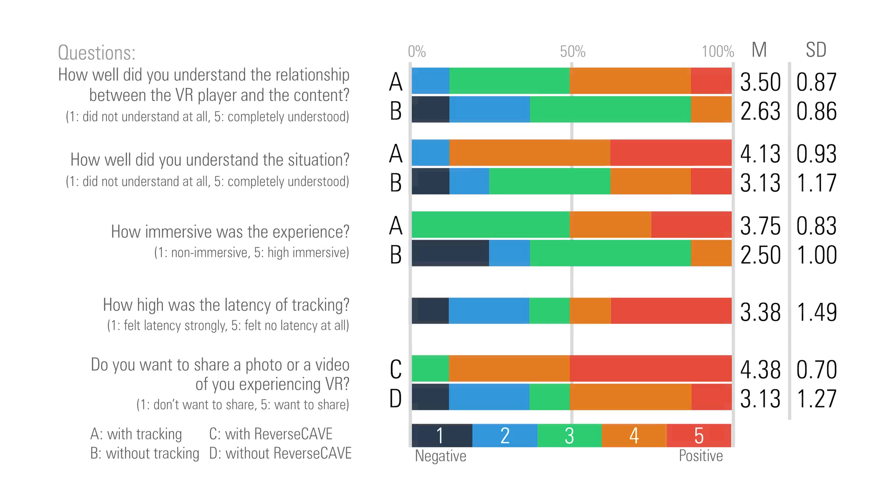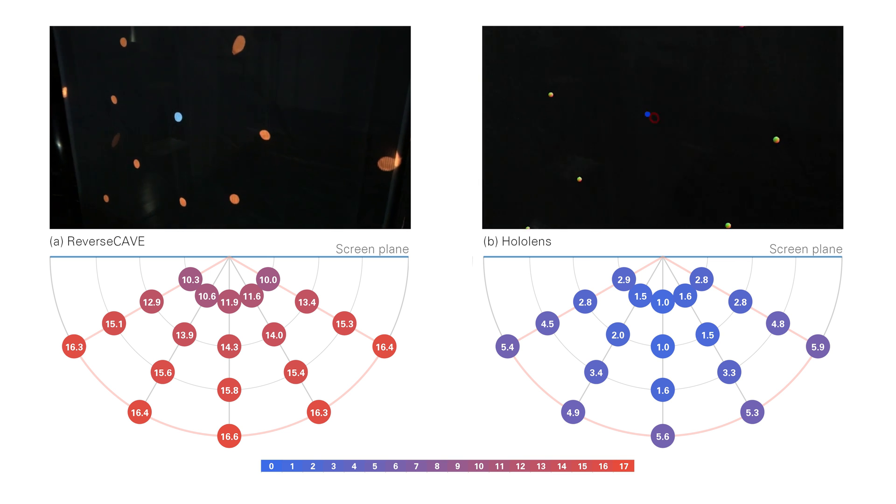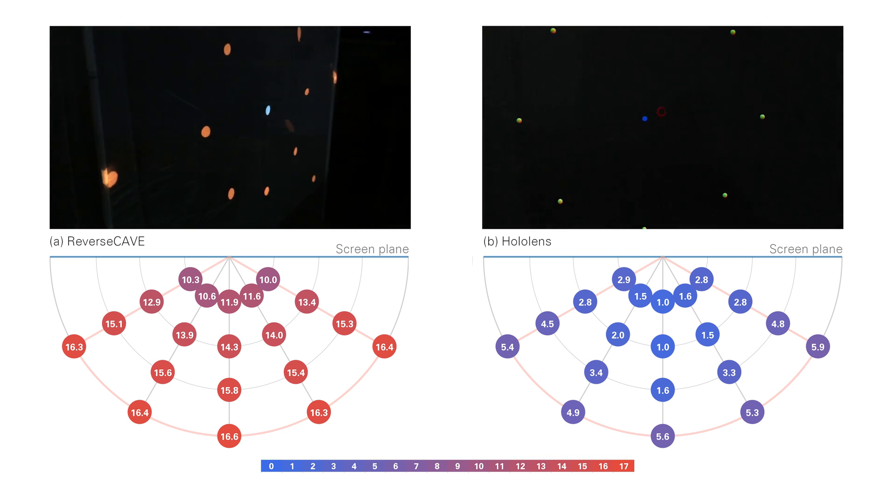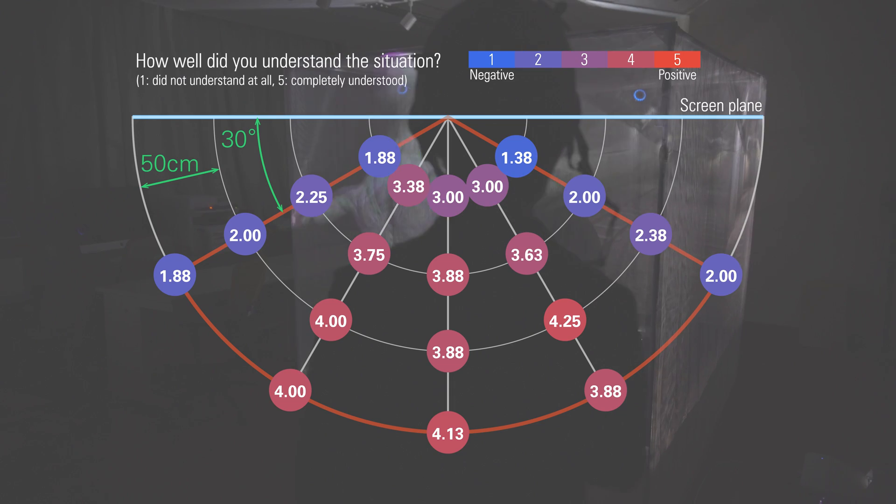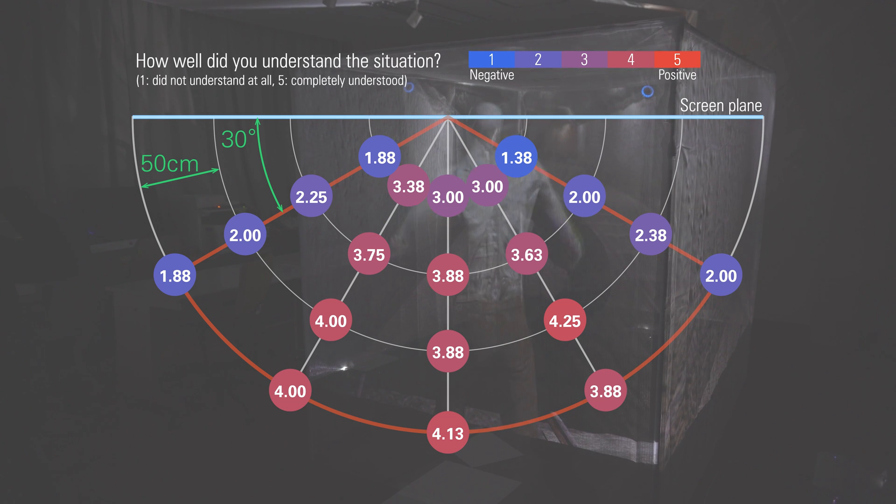We investigated whether the observer can tell what VR content the player is experiencing with and without Reverse Cave. We investigated the influence of each system to the visibility of contents when presenting the same content in Reverse Cave and HoloLens. We examined how the relative position of the observer and Reverse Cave affect visual consistency.